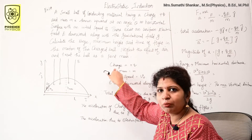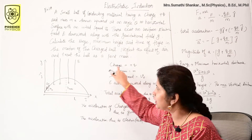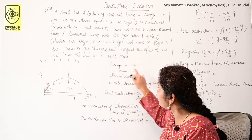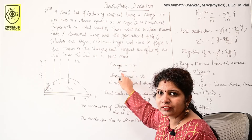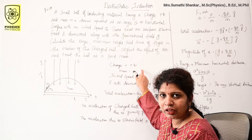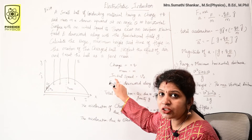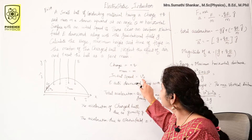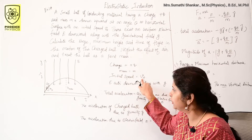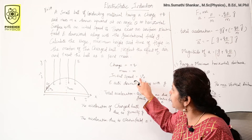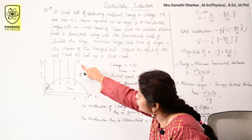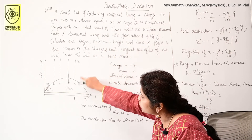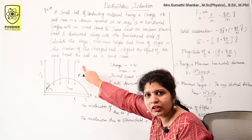What is given? The charge of the ball is +q, the mass of the ball is m, the initial speed is v₀, and the uniform electric field E acts downwards along with the gravitational field.